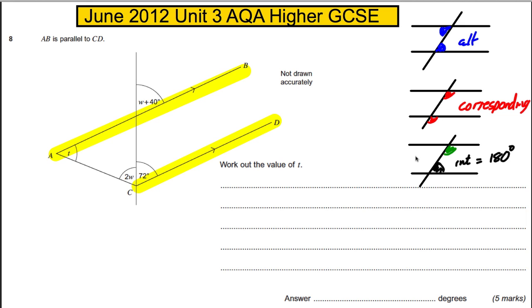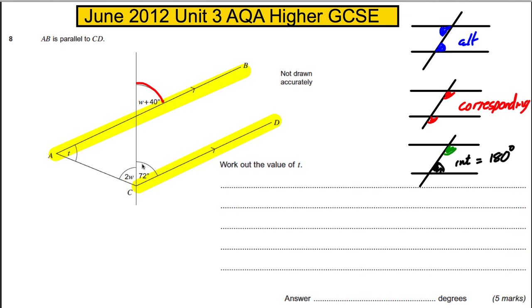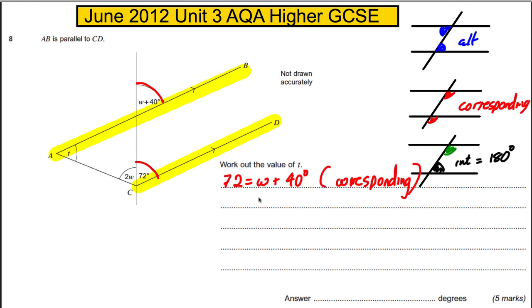We're working out the value of T — that's what we're trying to find. The first thing we can do is clearly see that this angle and this angle must be the same because they are F angles, or corresponding angles. So we can say that 72 must equal W plus 40 degrees.